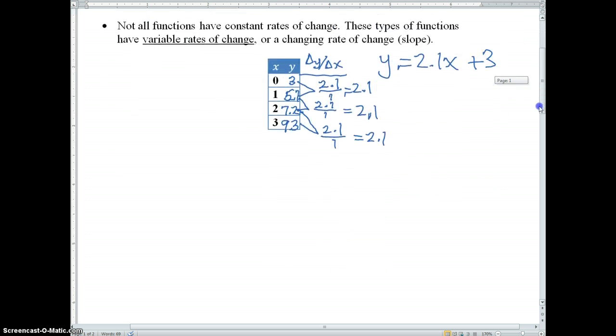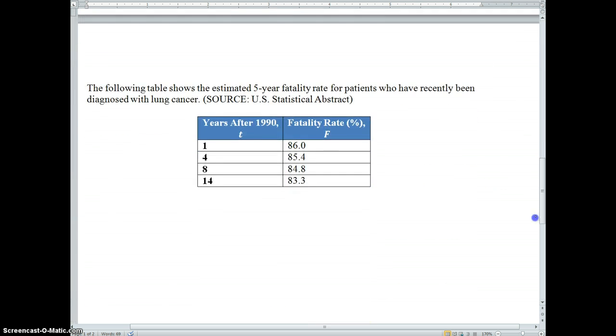But not all functions are this way. Let's take a look at one example. The following table shows the estimated 5-year fatality rate for patients who have recently been diagnosed with lung cancer. So, let's just analyze the rates of change. What I'm going to look at is my output is the fatality rate, my input is the years.